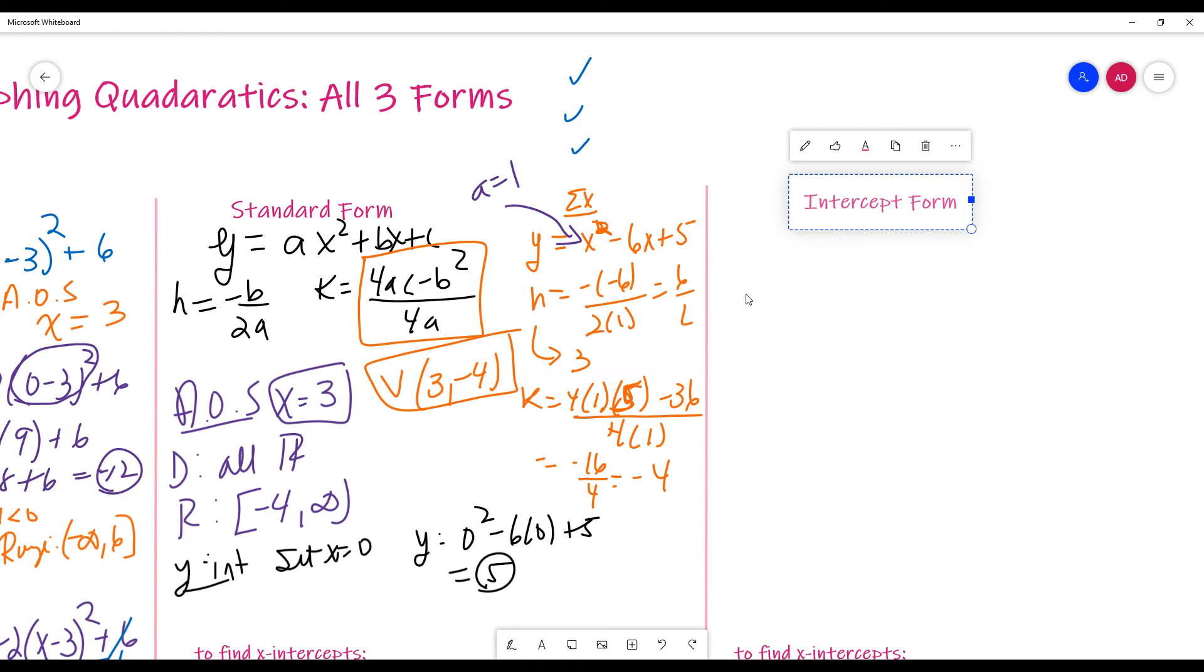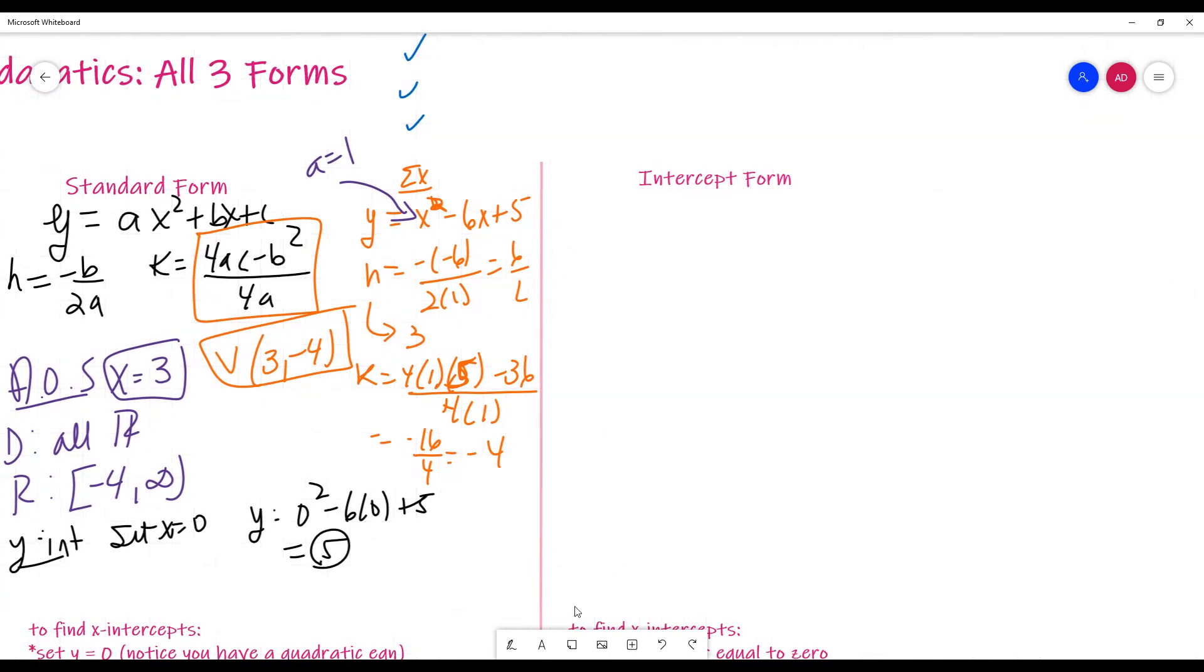Intercept form. And this is the one that a lot of teachers actually don't talk about too much. It's actually not as bad as it looks. So, intercept form is Y is equal to A, X minus R1, X minus R2. Okay. Where R1 and R2 are roots. Okay. They are roots to the quadratic. And I want to stress that. Okay. So, that means they can be X-intercepts, but we also know imaginary roots can play a role, too. Okay. But for our purposes, we're going to keep them real. Okay.